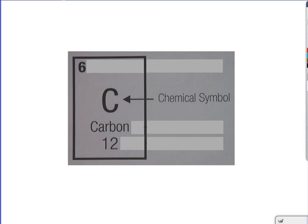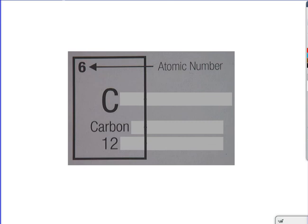After the chemical symbol, the next thing we are going to talk about is the atomic number. The atomic number is located at the top, and it is the number of protons in the atom. We'll learn more about this in the future.